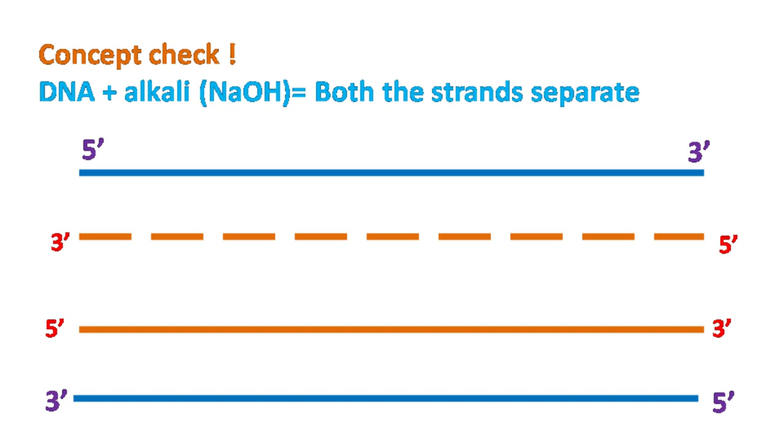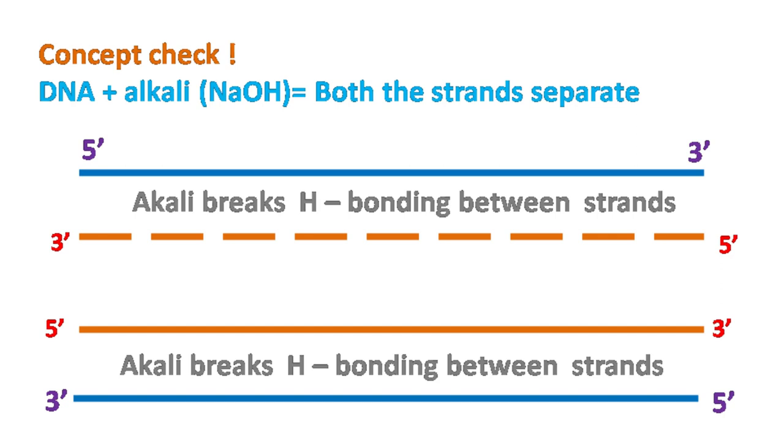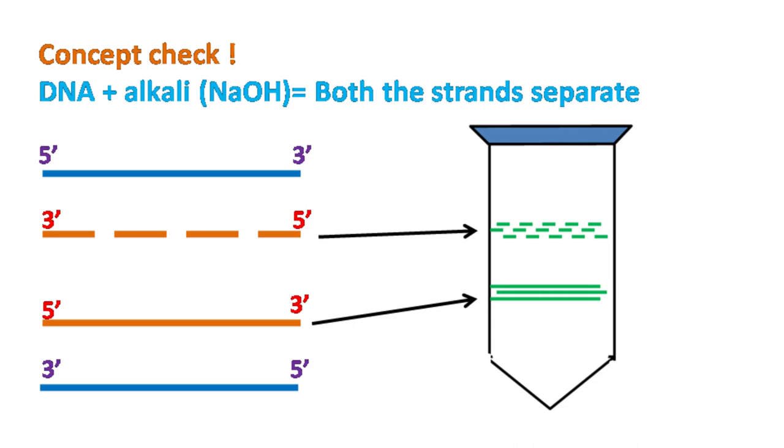The alkali breaks hydrogen bonding between the strands. As a result, both of them get separated. And once they are separated, they can be detected by density gradient centrifugation.